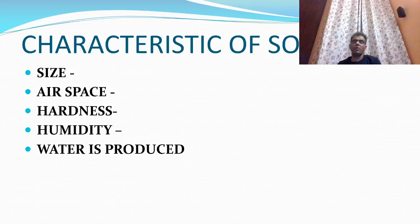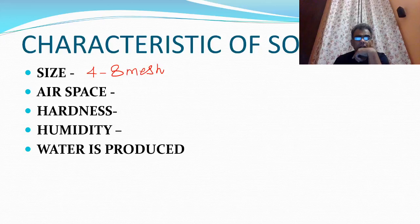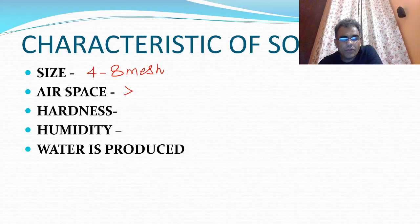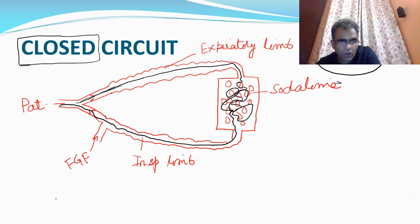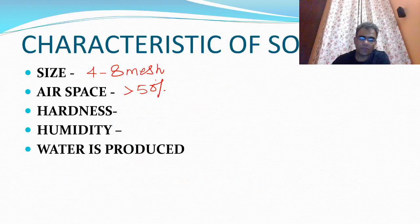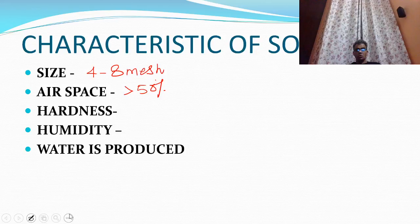Some important characteristics of soda lime: the size of the soda lime granule is 4 to 8 mesh. Air space should be more than 50 percent because this reaction takes place on the surface of the granule, not inside. There must be sufficient air space. The clinical significance is that you should not tightly pack the soda lime - just fill it, because if you pack it, air space will be lost and soda lime will become less effective.